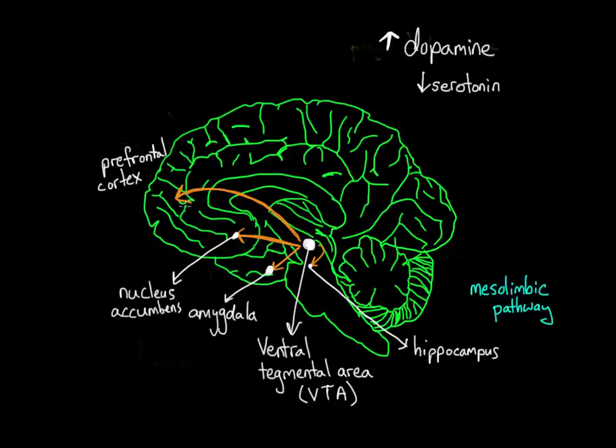So in the previous video we talked about the reward circuit in the brain at sort of a broad level, and now what we're going to talk about is how that works at a lower level, at the neuron level, so that we can discuss issues like tolerance, addiction, and withdrawal.